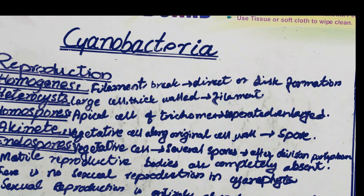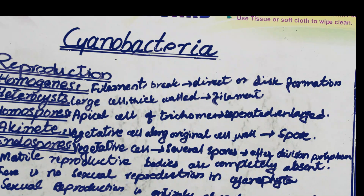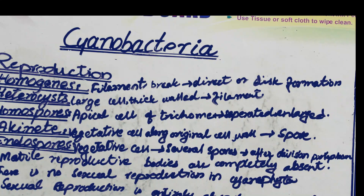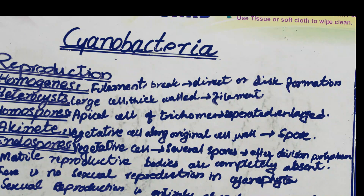The fourth type is akinetes. These are special spores formed from a vegetative cell that retains the original cell wall of the filament. The vegetative cell simply separates and forms a spore — this vegetative cell spore formation is known as an akinete. The fifth type is endospore formation. Inside a vegetative cell, several divisions take place producing many spores. Each endospore gives rise to a new individual.